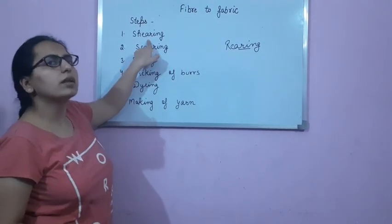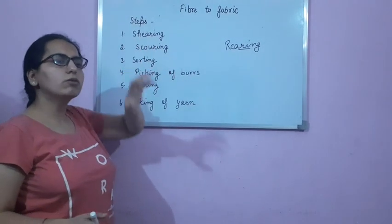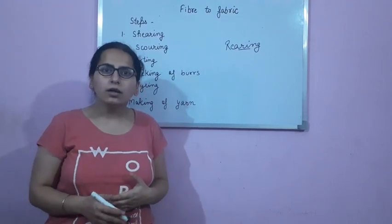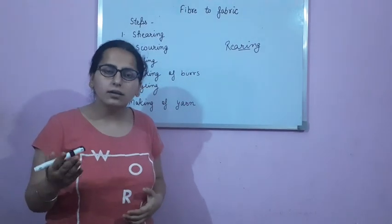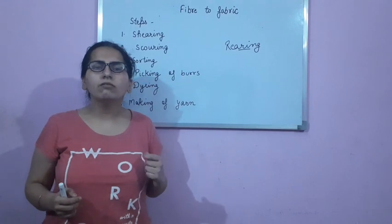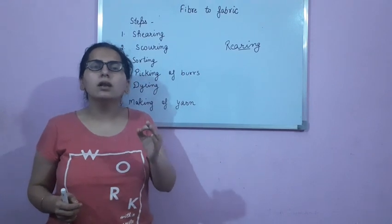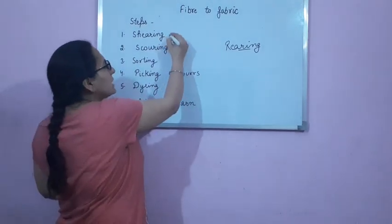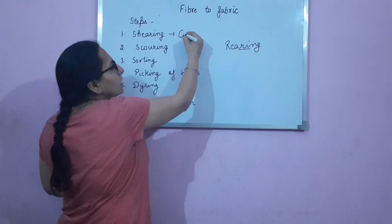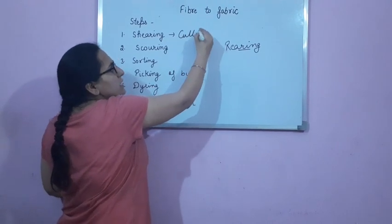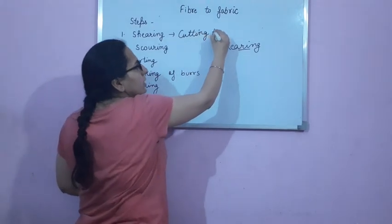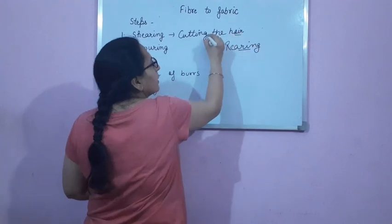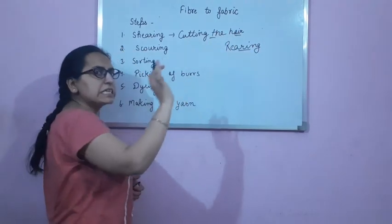The first step is shearing. What are we doing in shearing? In shearing we cut the hair along with a thin layer of skin. So shearing means cutting the fleece, or basically cutting the hair along with a thin layer of skin.